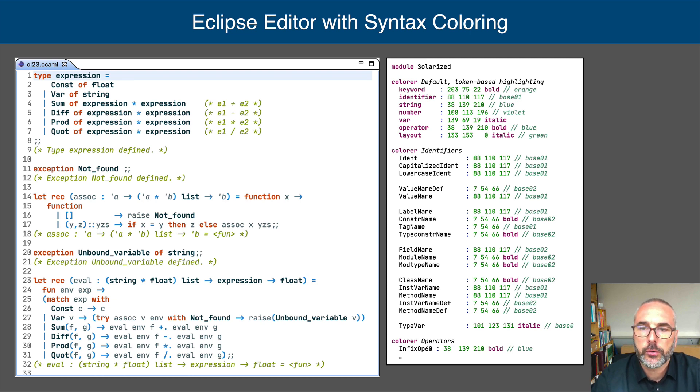The syntax coloring rules can be adapted in an editor service configuration file. Here, I have defined an editor configuration based on the solarized color scheme. Note that different colors are assigned to different types of identifiers. For example, constructor names and type constructor names are set in bold, while type variables are set in a lighter, italic style.